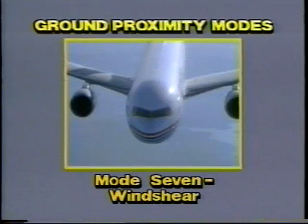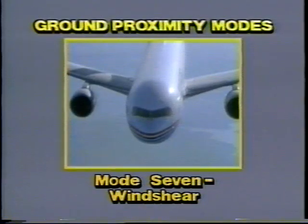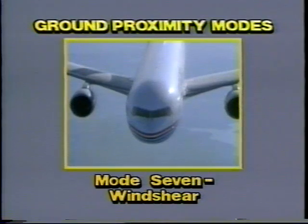Mode seven, the wind shear mode, takes priority over all other ground proximity modes. It alerts the flight crew of dangerous downdraft or updraft conditions.